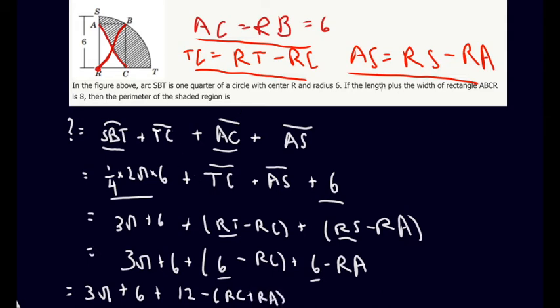And it says here that the length plus the width of rectangle ABCR is 8. Well, that's just RC plus RA, right? RC is the width of our rectangle. And RA is the length of our rectangle. So we can write RC plus RA is equal to 8. RC plus RA is equal to 8. And so this will help us simplify our equation.